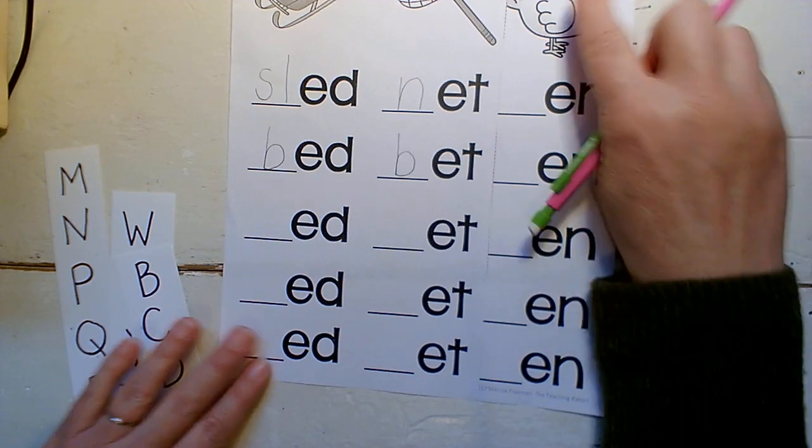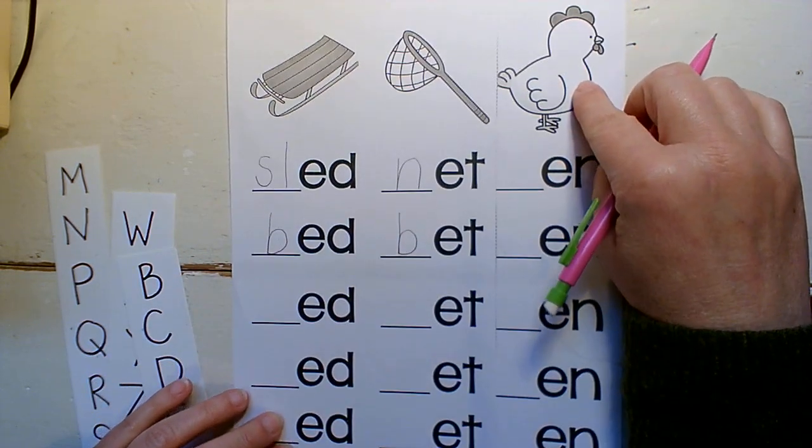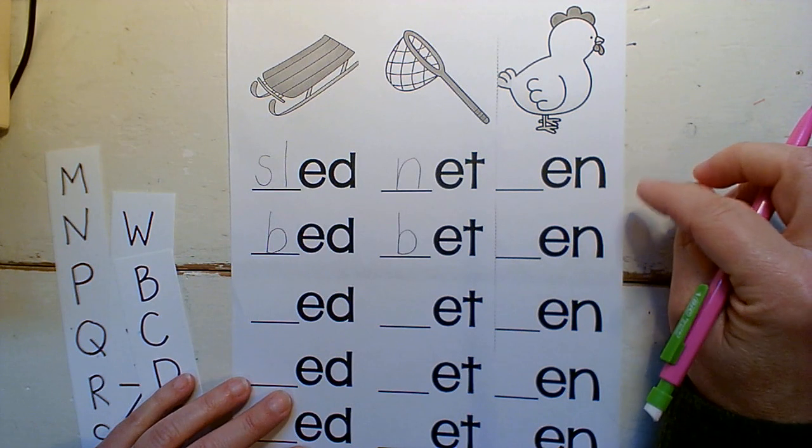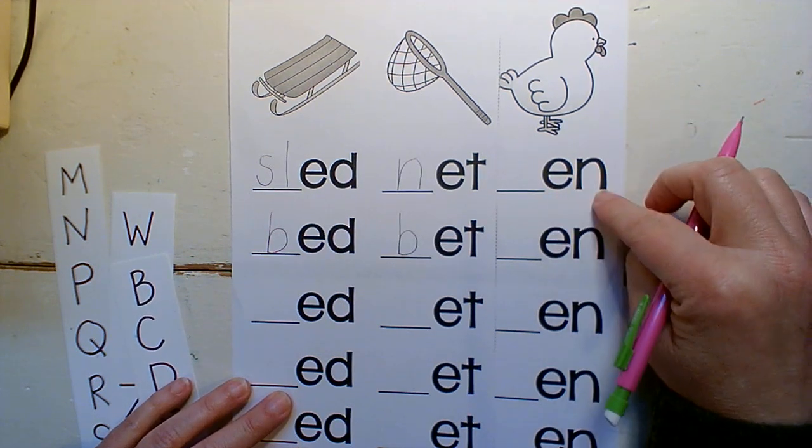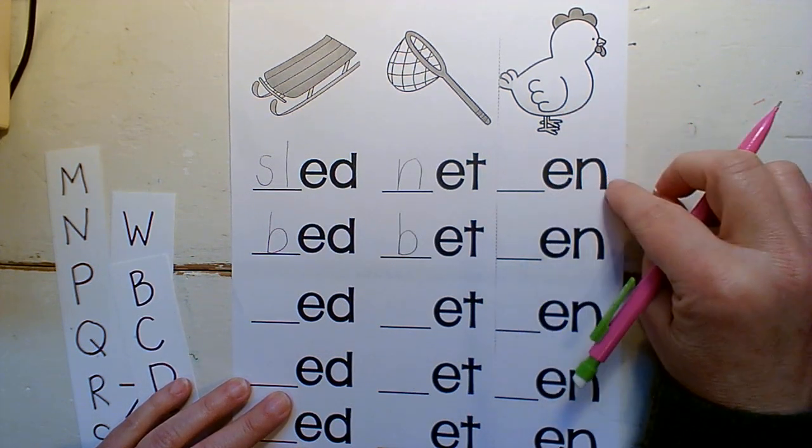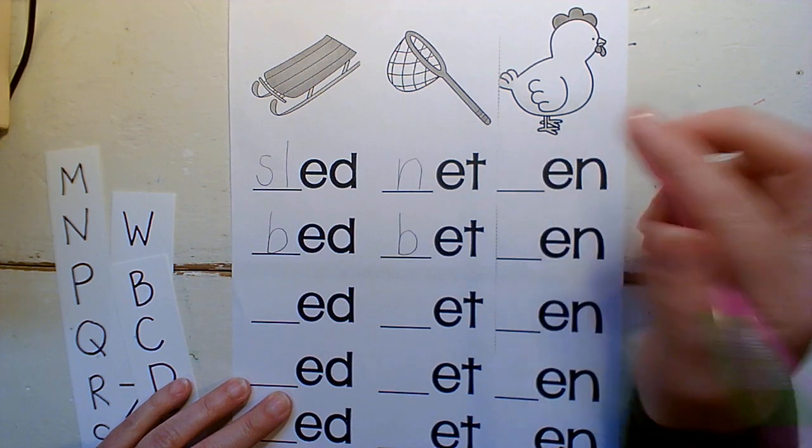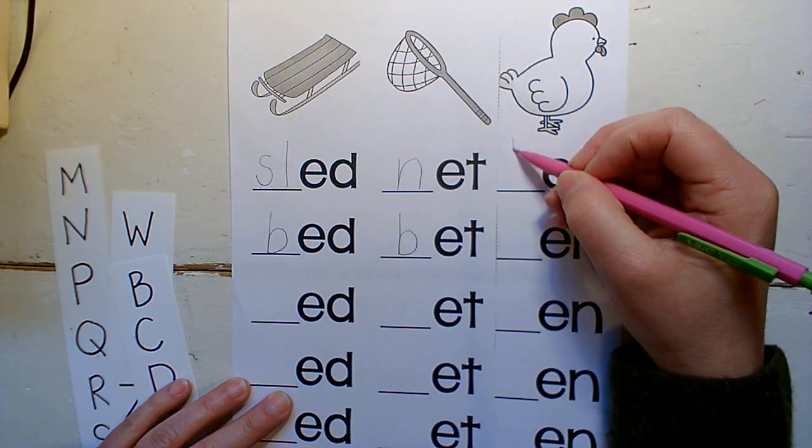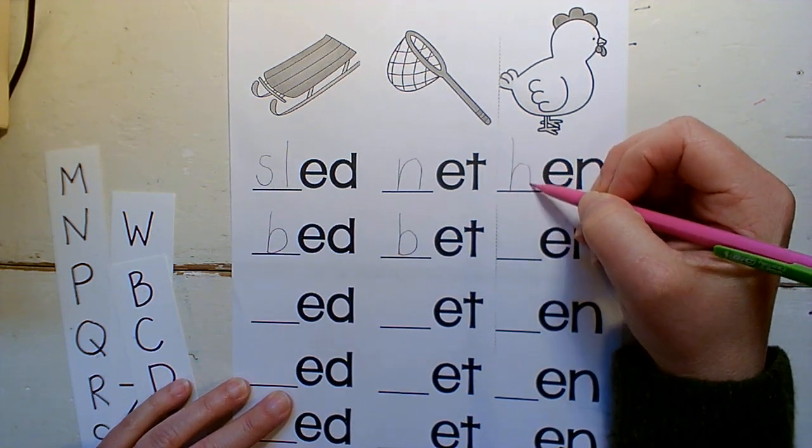Okay. It's a chicken, but in this exercise, it's a hen. So en says en. H, hen. H, h, h. H. H, hen.